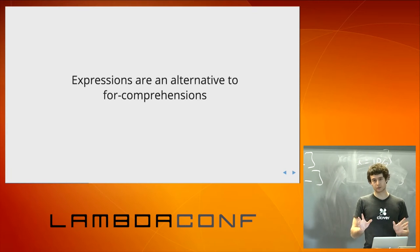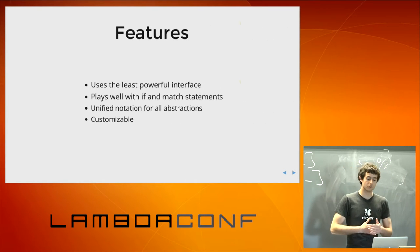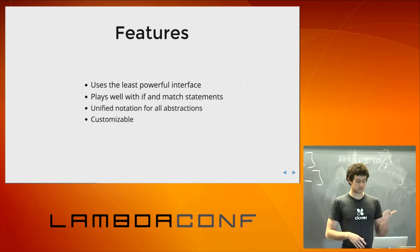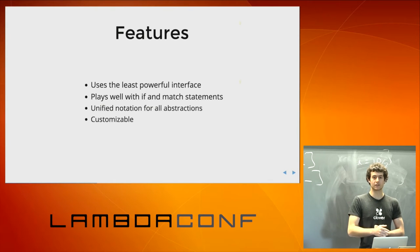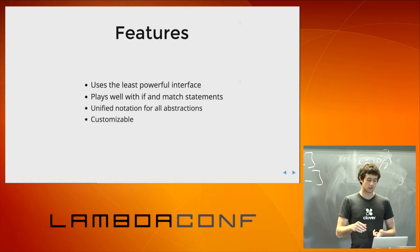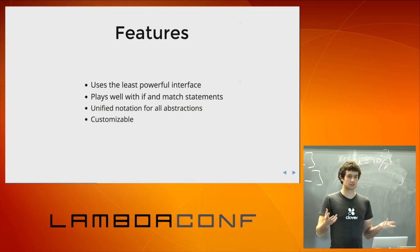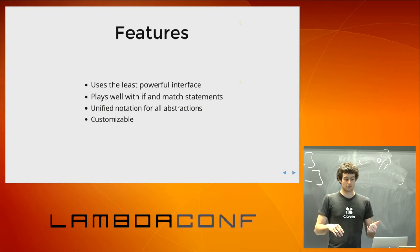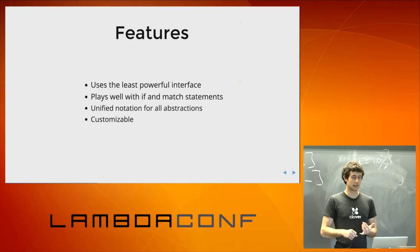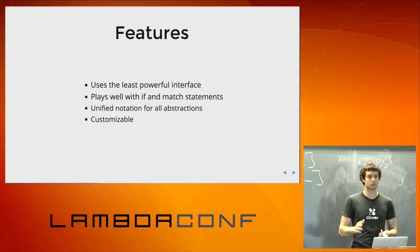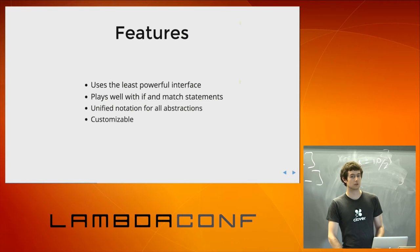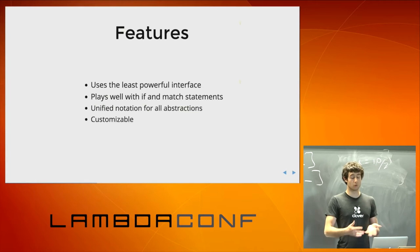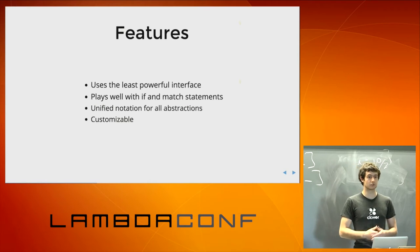I'm now calling it an alternative to for-comprehension. What's a high-level view of the features for Expressions? First, it uses the least powerful interface — meaning we can fail fast using this notation. Second, it plays well with if and match statements, whereas for-comprehensions start to break down with a bunch of conditionals. Third, it's a unified notation — it works with Scala futures, ScalaZ Task, Option, and any monad basically. And finally, it's customizable — if you want it to fail fast, you can provide an instance of a type class to do that; if you don't, you can provide an instance that doesn't fail fast.